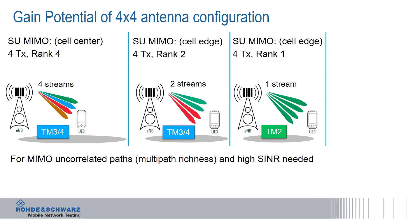If we are going really to the cell edge far out, we can still use four transmitters but only rank 1. So we are using just one stream now — only one color is visible — and we use four transmit antennas. This is called transmit diversity, transmission mode 2, and this has a big impact on cell edge performance.